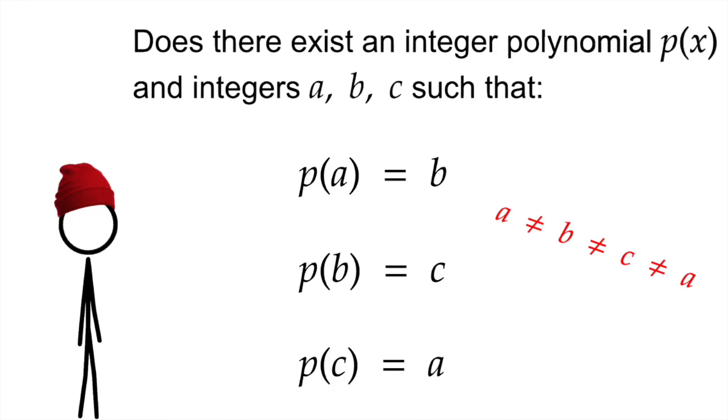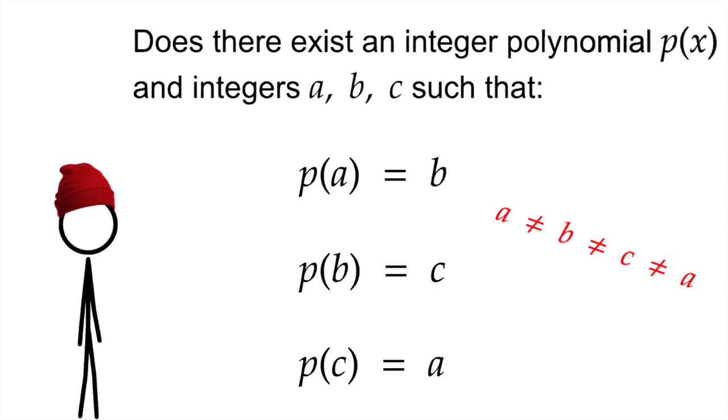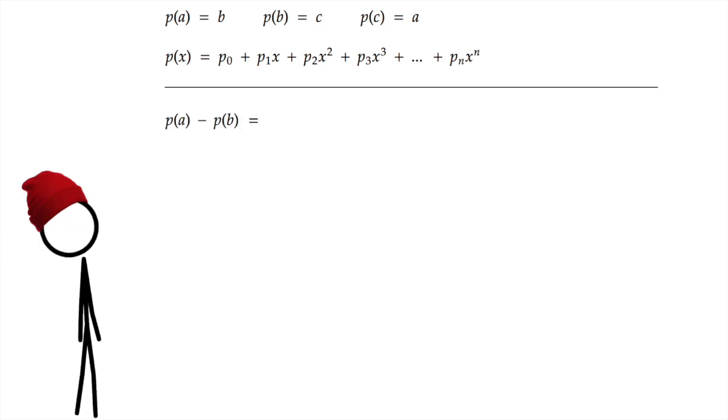Pause the video, give this problem a try if you want. All right. Well, let's assume it is possible. p of a equals b, p of b equals c, and p of c equals a. And p itself is our polynomial. So it has the form p naught plus p1x plus p2x squared plus p3x cubed plus dot dot dot plus pnx to the n. Now here's a trick. I think it's called the divisibility theorem or something. Consider p of a minus p of b.